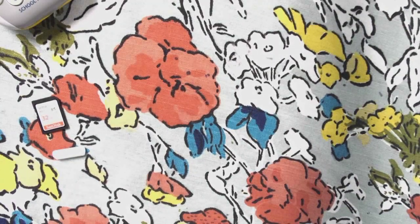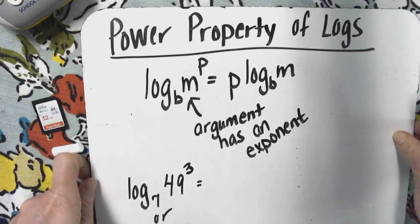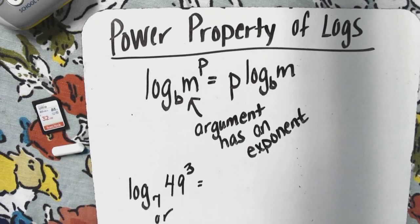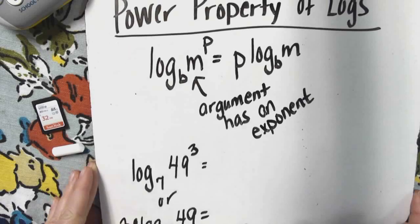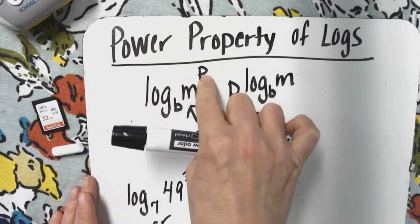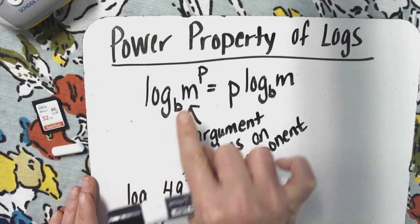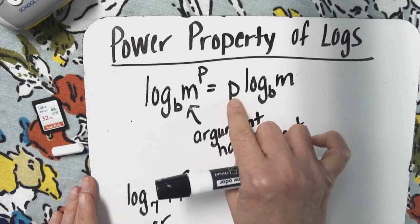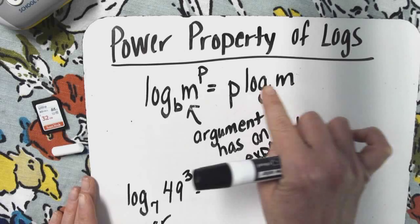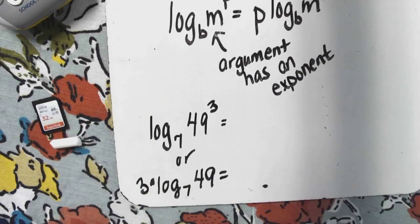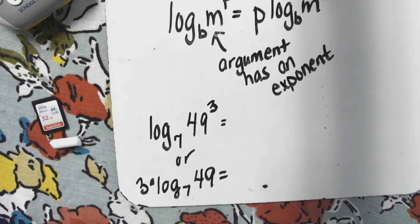Last one is the power property of the logs. I think this is the one I probably use the most when I'm looking at business models and interest problems. So this one is the log base b of an argument raised to a power. If you have an exponent on an argument, you may put it in the front. So it's like the exponent times whatever that log expression is.